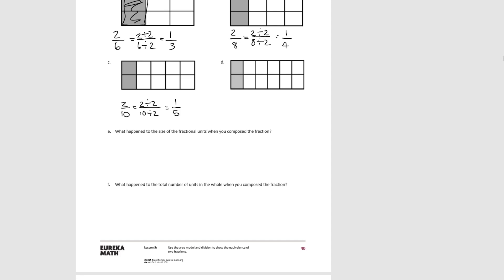Try D. Originally our whole was divided into twelve units and we shaded two of them. Then in our area model, our larger units are sixths. So we're going to divide both the numerator and the denominator by two. Twelve divided by two is six, two divided by two is one, and we see we have one sixth shaded.